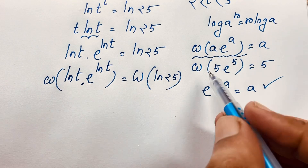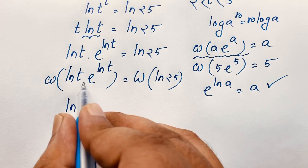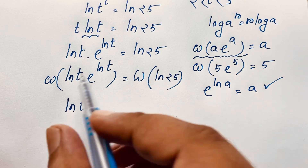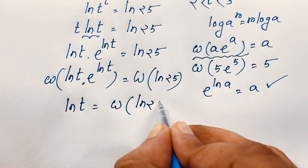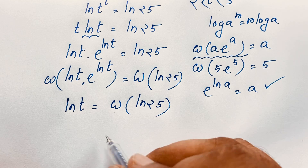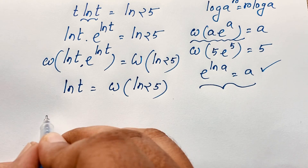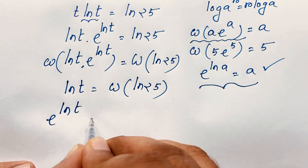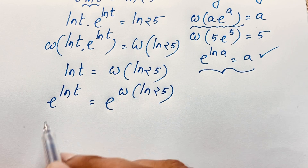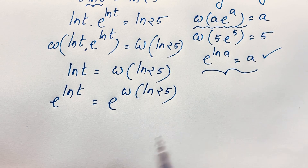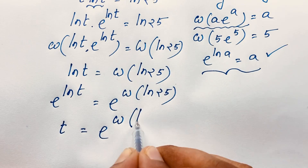Applying the Lambert W function, the left side simplifies. Comparing with the formula W(a · e^a) = a, we see that a equals ln(t). So we get ln(t) = W(ln 25). To find t, I apply e to both sides: e^(ln t) = e^(W(ln 25)). Since e^(ln t) = t, we get t = e^(W(ln 25)).